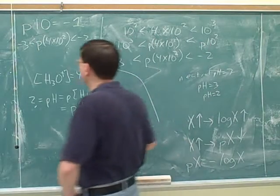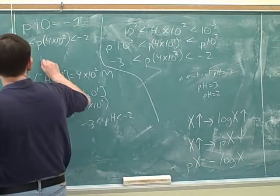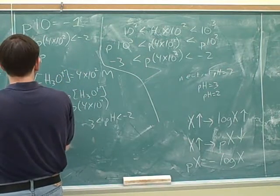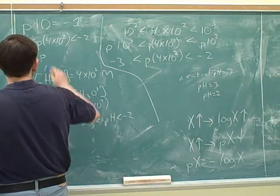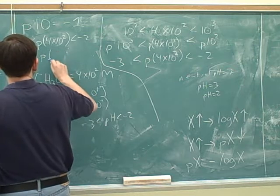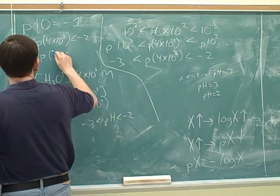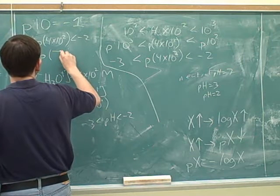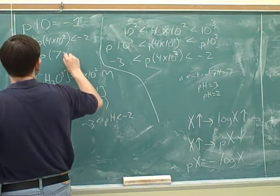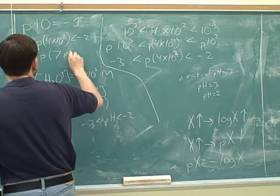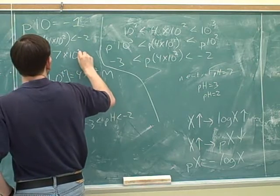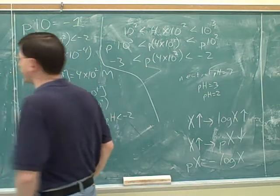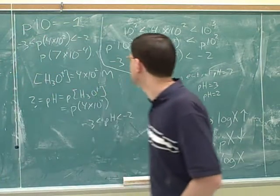Let's try another example. Let's take the p of 7 times 10 to the negative 4.